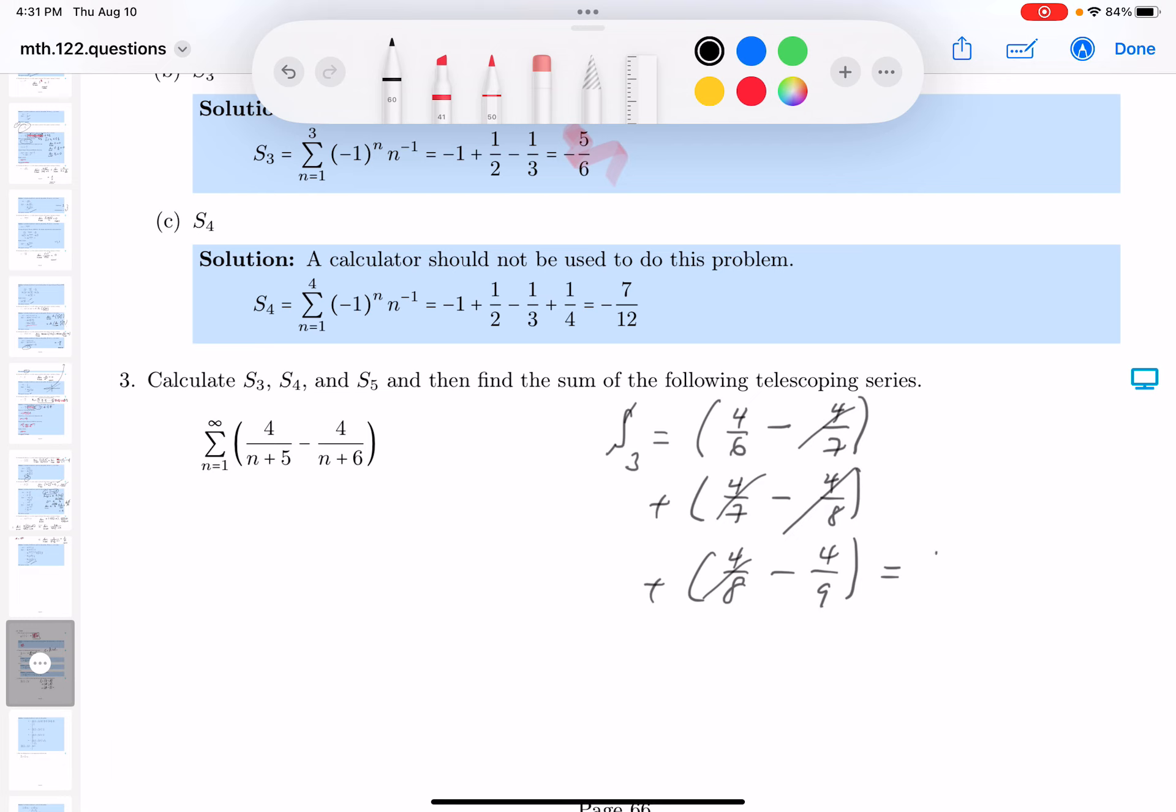So what are you left off with? 4 sixths minus 4 ninths. I'm going to say a common denominator of 18. That's going to give me 12 minus, because 3 times 6 is 18, and 3 times 4 is 12. 2 times 9 is 18. 2 times minus 4 is going to be minus 8. So what do you get?